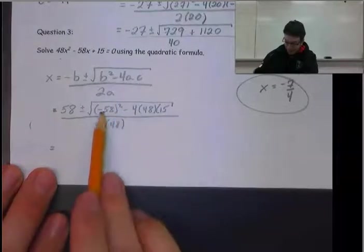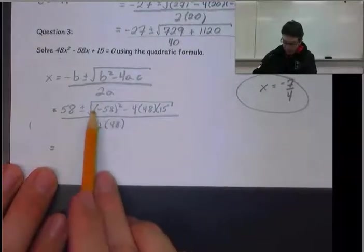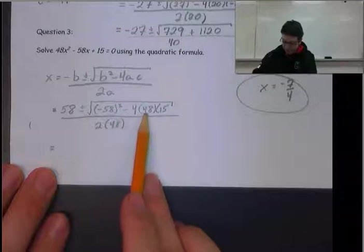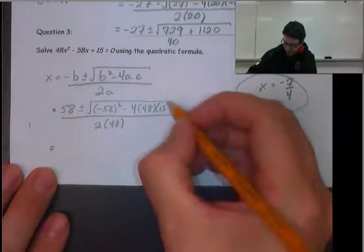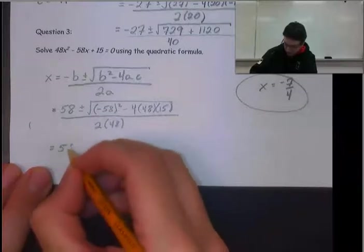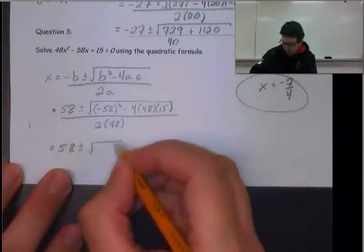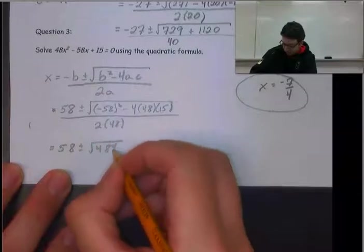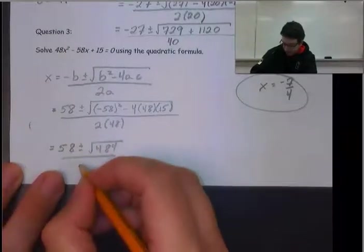In your bracket, you get 3,364 - 2,880, which gives you the square root of 484, or 96.